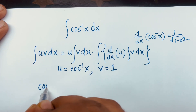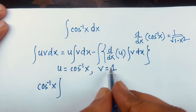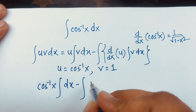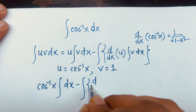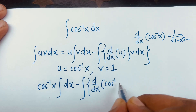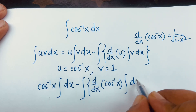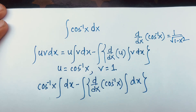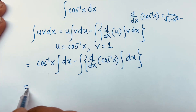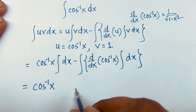So if I put both into this formula: here is u, which is cosine inverse x, and the integral of v dx — v is 1 — so it will be dx. Minus, and here is the integral of the derivative of u, where u is cosine inverse x.